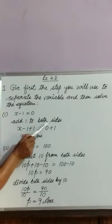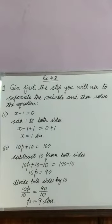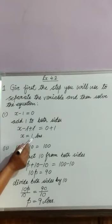Add 1 to both sides. x minus 1 plus 1 is equal to 0 plus 1. 1 cancelled with 1. x is equal to 1 is the answer.